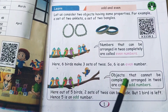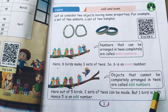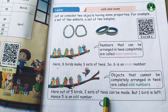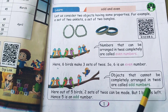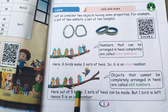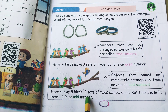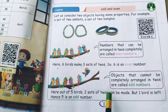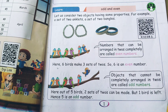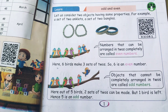Objects that cannot be completely arranged in 2s are called odd numbers. Here, out of 5 birds, 2 sets of 2s can be made but 1 bird is left, so 5 is an odd number.